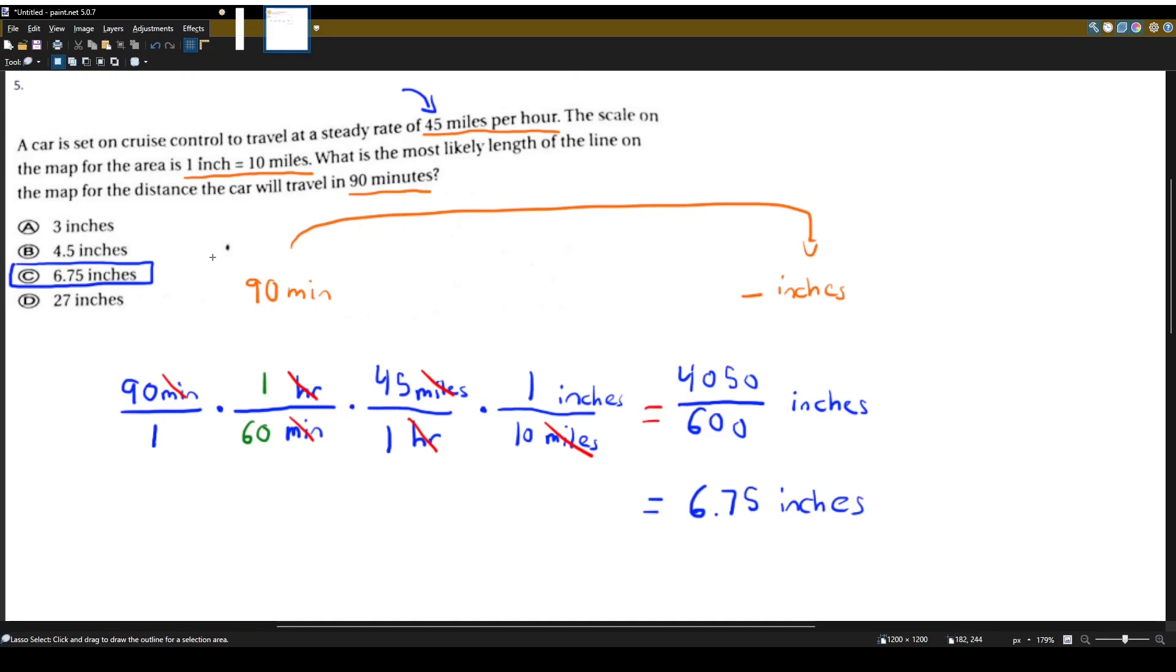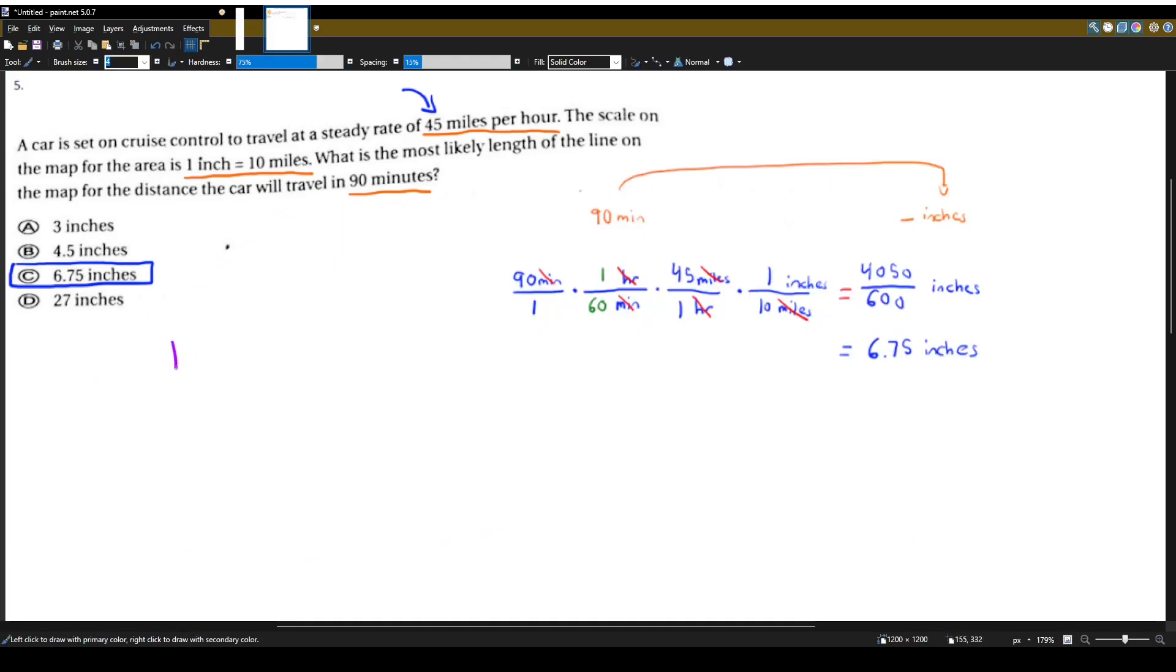Let's see another way we can reason out this problem without having to go through all this unit conversion. So what do we know? We know 1 inch is 10 miles. And we know the car goes 45 miles per hour. So 45 miles is pretty much 40. Close enough. Let's just think of it that way. So 1 inch is 10 miles. So 4 inches is 40 miles. And we don't want 1 hour. We want 90 minutes, right? 90 minutes is just an hour and a half, right?